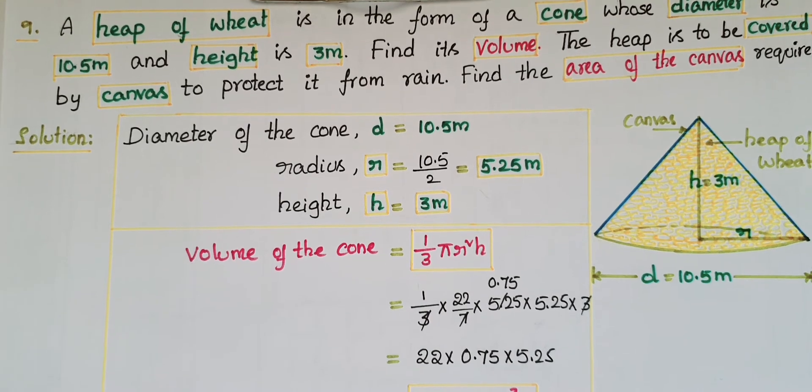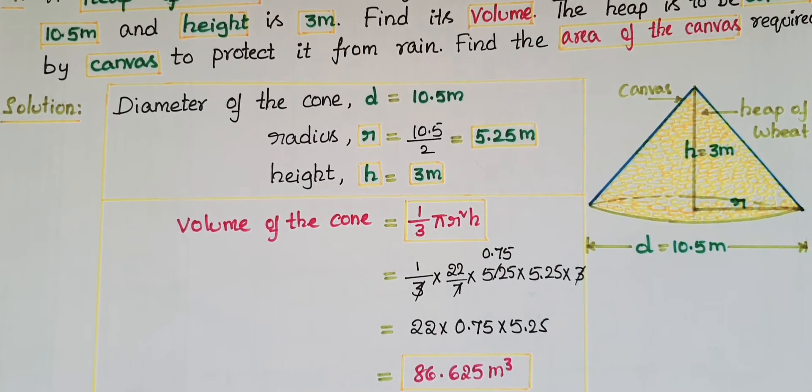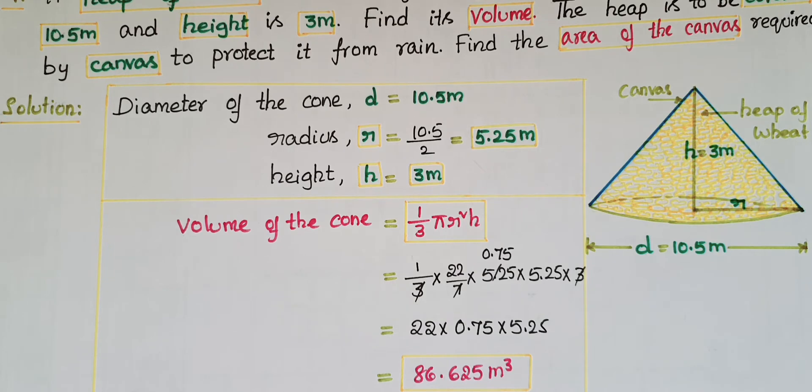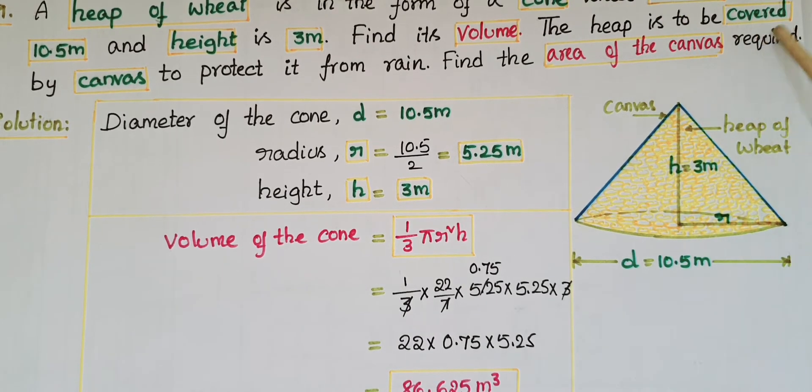This equals 86.625 cubic meters. This is the volume of the cone.